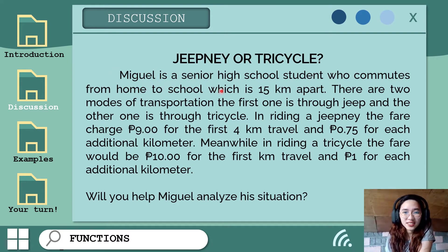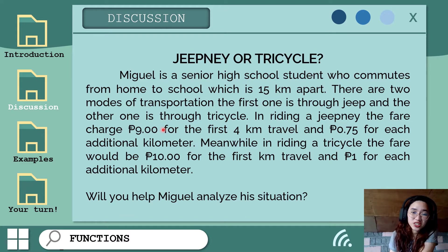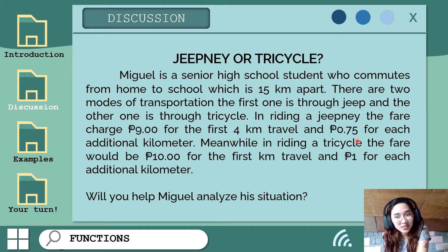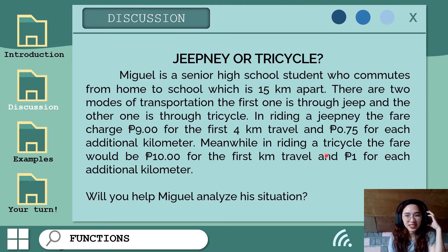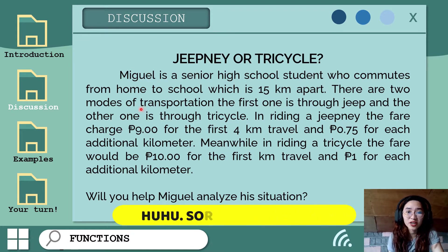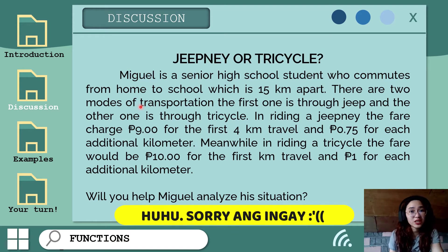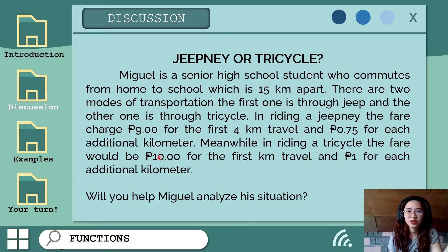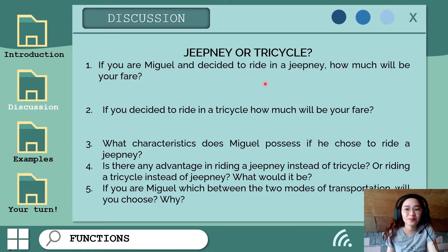Let's read and analyze this problem. Miguel is a senior high school student who commutes from home to school, which is 15 kilometers apart. There are two modes of transportation: jeepney and tricycle. In riding a jeep, the fare charge is 9 pesos for the first 4 kilometers and 75 cents for each additional kilometer. Meanwhile, in riding a tricycle, the fare would be 10 pesos for the first kilometer traveled and 1 peso for each additional kilometer. Will you help Miguel and analyze this situation?